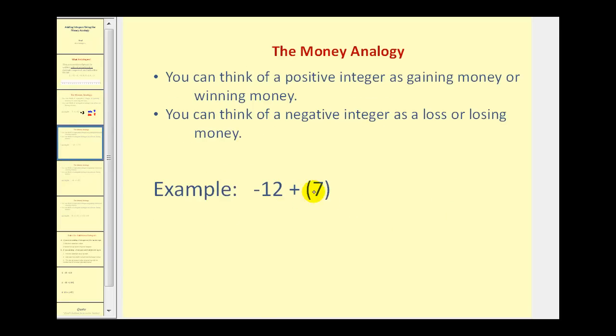Here we have negative 12 plus 7. Well for the negative 12 we start off with a loss of 12 dollars and then we add a positive 7 so we gain or win 7 dollars. So if you lose 12 dollars and then you win 7 dollars where would you stand? You would still be down 5 dollars. Therefore this sum is negative 5. Notice that the loss outweighs the gain resulting in a negative sum.